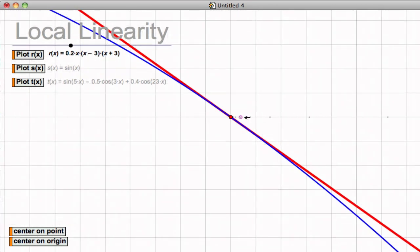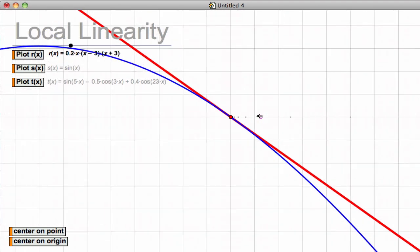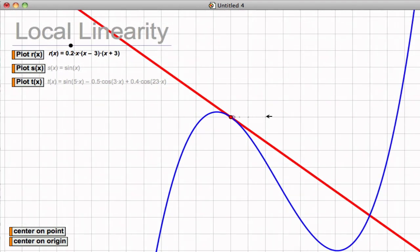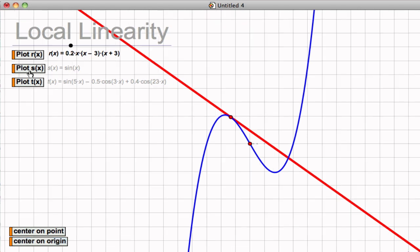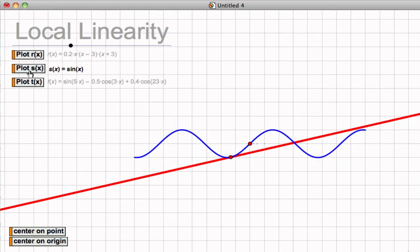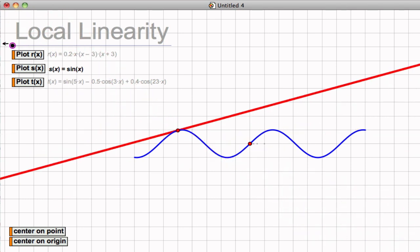So we'll look at this for a different type of function now. So if our function is a sinusoid, then the tangent line goes through a very different pattern.